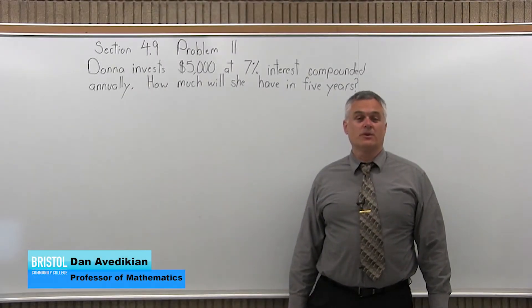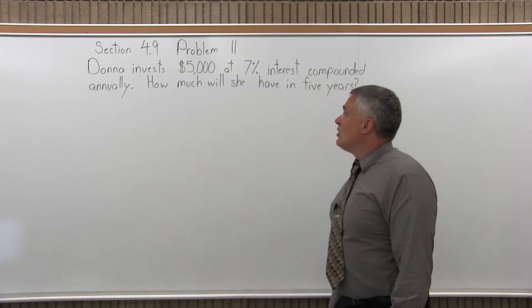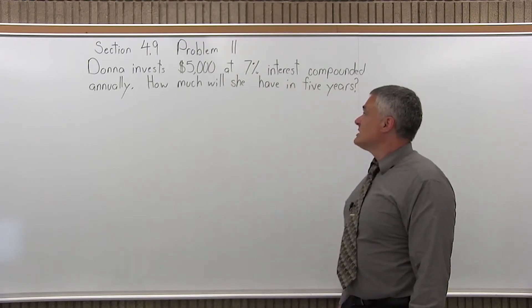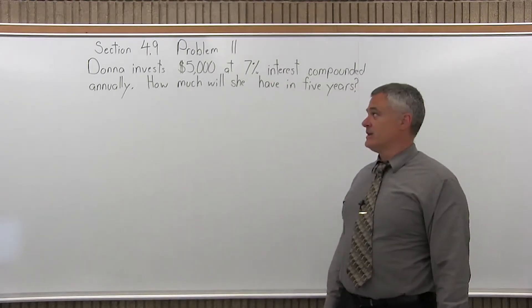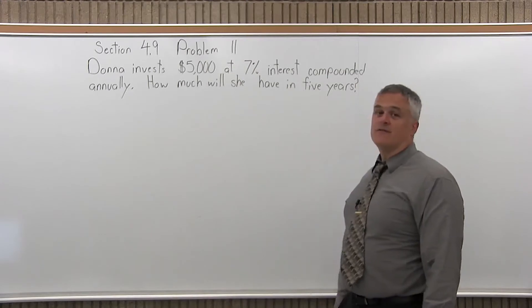This is Section 4.9, Problem 11. Donna invests $5,000 at 7% interest compounded annually. How much will she have in five years?